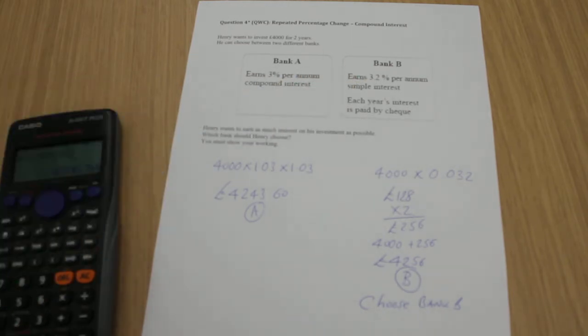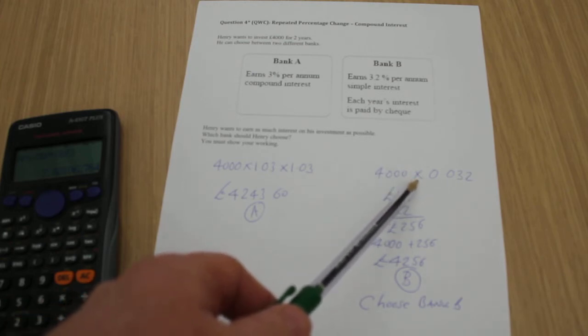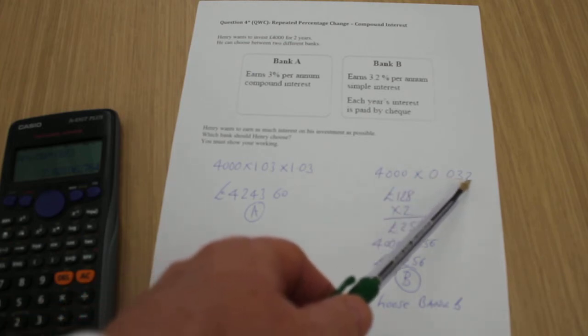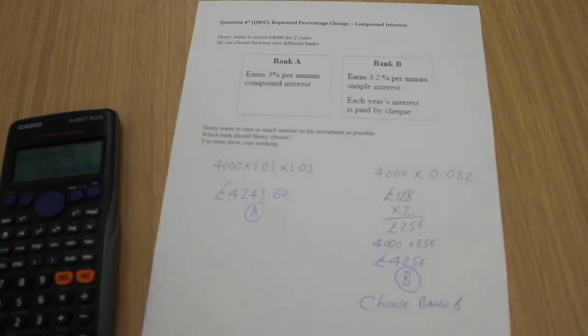Bank B, on the other hand, being simple interest, I have to calculate 3.2%, which is a case of multiplying by 0.032. That gets me £128.